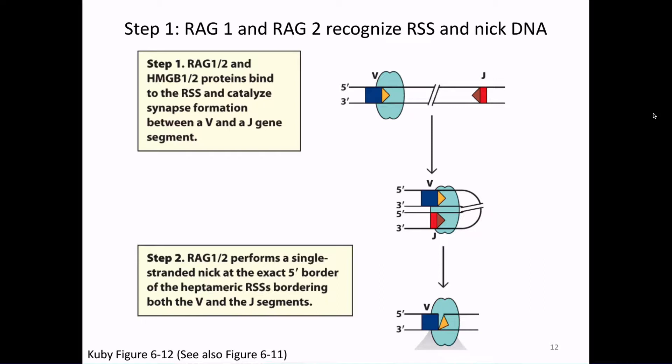There's a key thing we have to know about this cut. It is a special kind of cut called a nick. RAG2 makes what's called a DNA nick, meaning that one side of the double-stranded DNA is cut but not the other. RAG2 makes that single-stranded cut right at the border between the RSS and the V, D, or J segment.